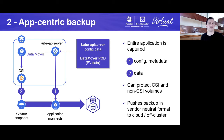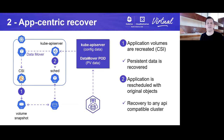The application-centric version of protection has one important distinction, which we can see in step one here. In step one, we are collecting the application manifests or config so that both the config or application metadata is recorded along with the persistent data in step two. This method allows us to recreate the volume and then reschedule the application using all of the recorded application metadata, and this allows us to recover that application to any API-compatible cluster.